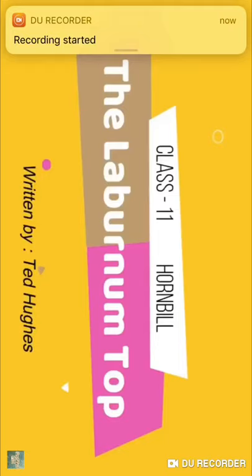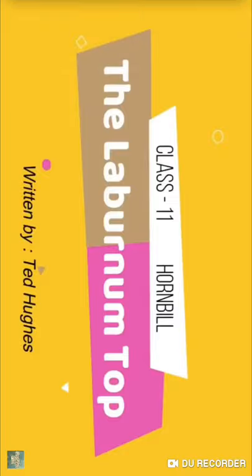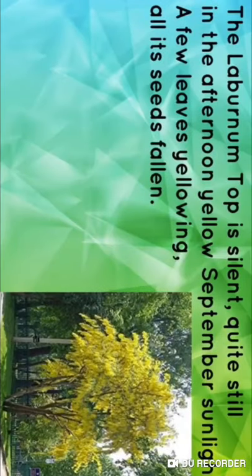Students, today we will do a line-to-line explanation of the poem 'The Laburnum Top' by Ted Hughes. This is a beautiful poem. In this poem, a goldfinch bird comes on the tree and brings liveliness to the tree. The first line of the poem is: